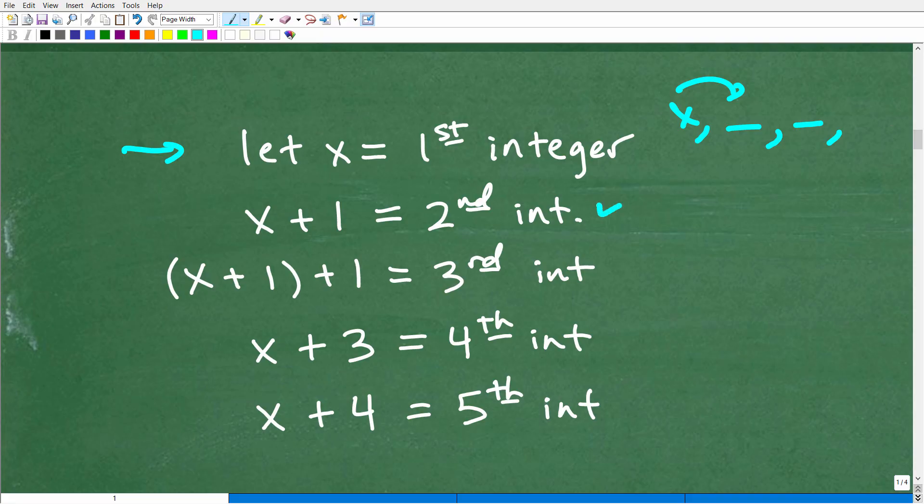So if x is our first integer, x plus one would be our second integer. Now, if I have x plus one, and now I add another one to the x plus one, I have my third integer. Now, this is x plus one plus one, or x plus two. Now, if I have x plus two plus one, I have x plus three. That's my fourth integer. If I add one to this, I got x plus four. That's my fifth integer.